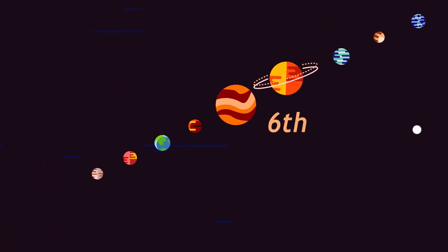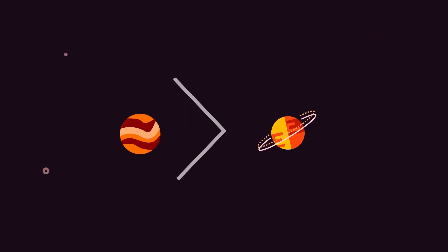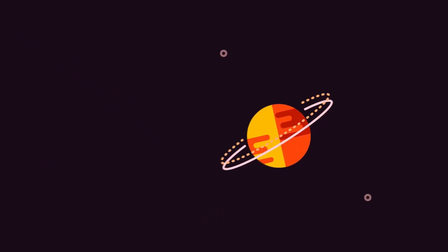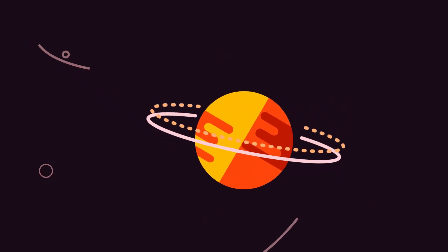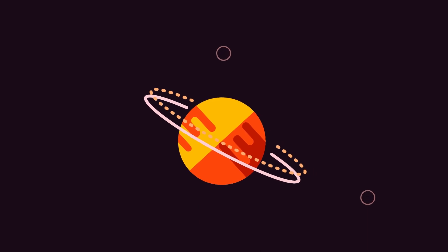Saturn is the sixth planet from the Sun and the second-largest planet in our solar system after Jupiter. Adorned with thousands of beautiful ringlets, Saturn is unique among the planets.